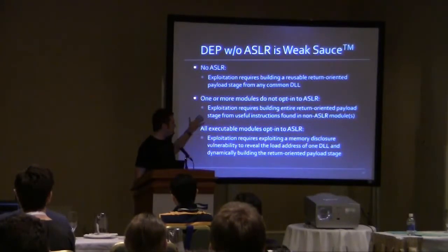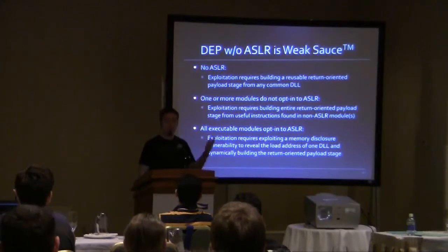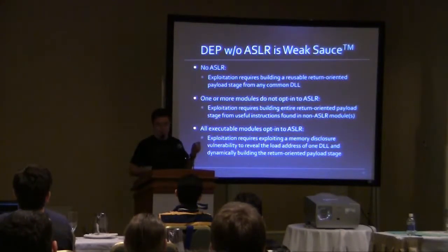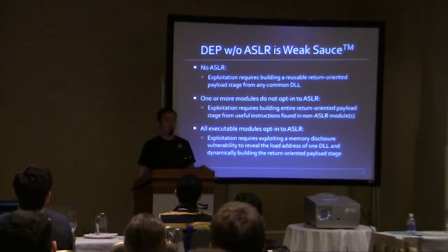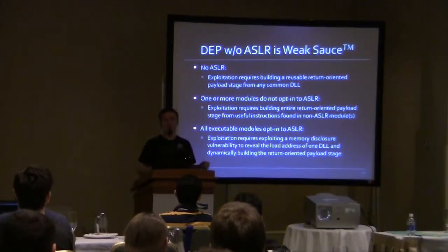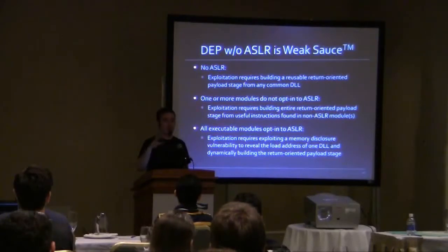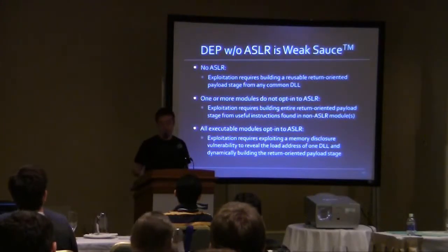ASLR kind of comes in degrees. If you have no ASLR, it's really easy to turn off DEP because you have a bunch of material you can use for return-oriented programming. If one or more modules do not opt into ASLR, you just confine your search to that module. If you know that module A is at location X, you just scan that and build your entire return-oriented program based on that.